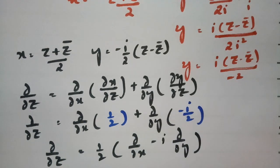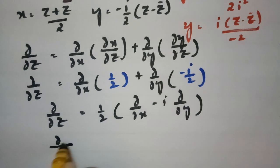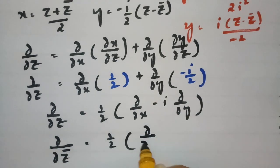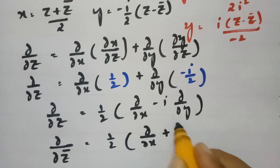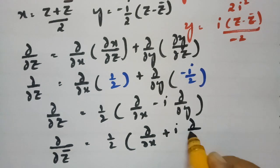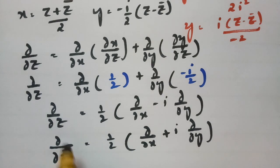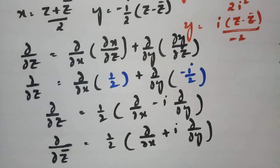Similarly, ∂/∂z̄ = (1/2)∂/∂x + (i/2)∂/∂y. So these are the two operator equations: ∂/∂z and ∂/∂z̄. Now if I multiply these two equations together: